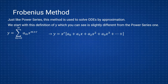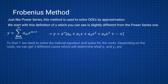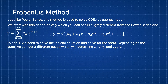The solution is still a summation, but this time everything is multiplied by x to the r. To find that r, we need to solve the indicial equation and solve for the roots. Depending on the roots, we can get two different cases which will determine what our two solutions y1 and y2 will be.